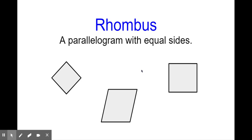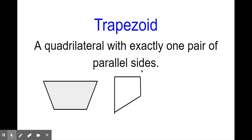A rhombus and a square are very similar to each other — they both have four sides that are parallel to each other. A rhombus is a parallelogram with equal sides. Remember, equal sides mean they are the same side length.